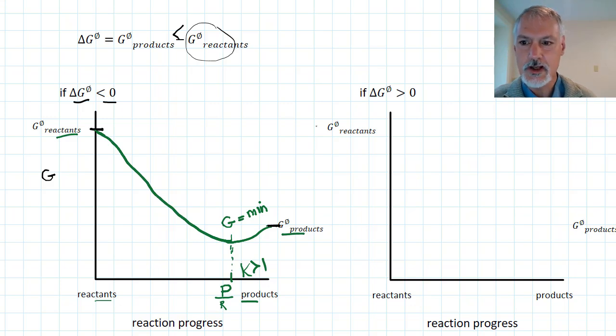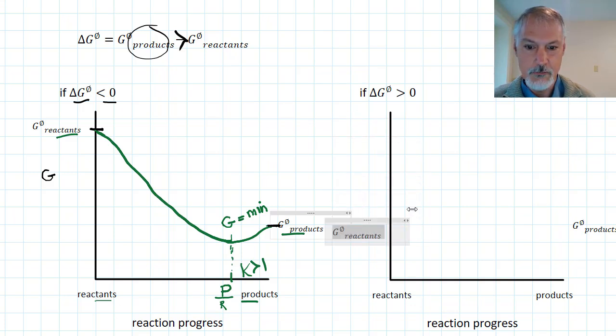Let's consider the converse situation. If we have a situation where the Gibbs free energy is positive, that would only happen if this value was bigger than this value. So in this situation, what we've got to do is move the positions of these. So my reactants have to start at a lower position, and my products start up here at a higher position.